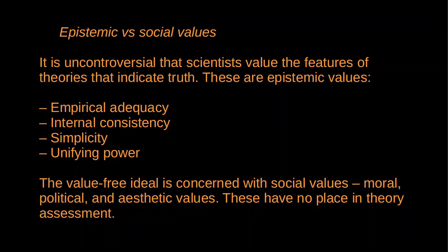These are fairly standard criteria for theory choice. Scientists aim to develop theories that exhibit these features because we assume they are in some way indicative of truth — these are the epistemic values. The real question is not about epistemic values; everybody grants that. The question is about the role of non-epistemic values: moral values, political values, aesthetic values — what we might broadly call social values.